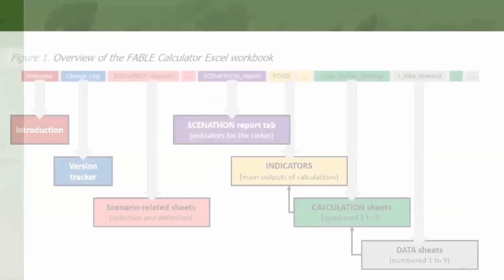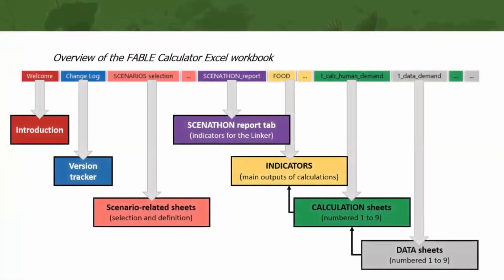The Fable Calculator comprises four main types of worksheets. In light red are the ones related to scenarios. In yellow, the ones related to the visualization of the main results indicators and objectives. In green, the ones related to the computation. And in gray, the ones that contain the input data.